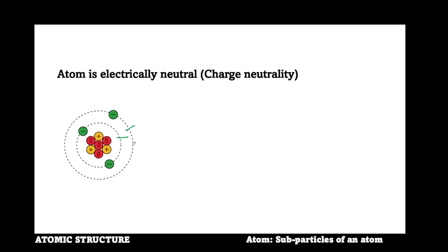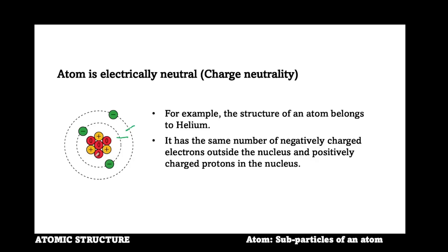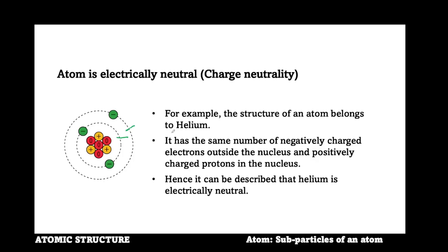For example, this structure belongs to helium. Outside the nucleus, there are two electronic shells, as we can see. On the other hand, there are three positive charges inside the nucleus, which means this structure has three protons. Likewise, there are four neutral particles inside the nucleus — 1, 2, 3, 4 — which indicates that there are four neutrons, because the particles are neither positive nor negative, that is, they are neutral. Since the number of positive charges inside the nucleus is the same as the negative charges outside the nucleus, this atom can be regarded as electrically neutral.